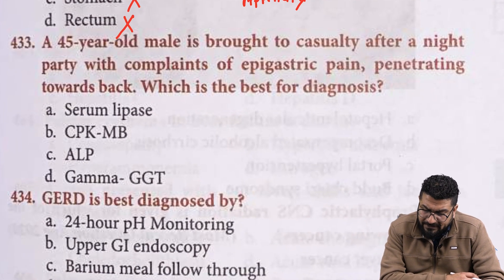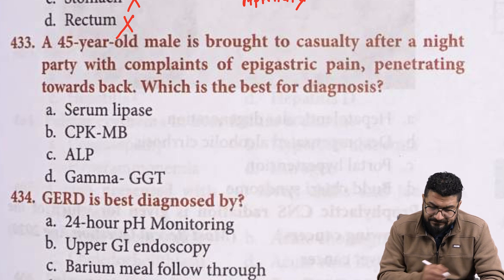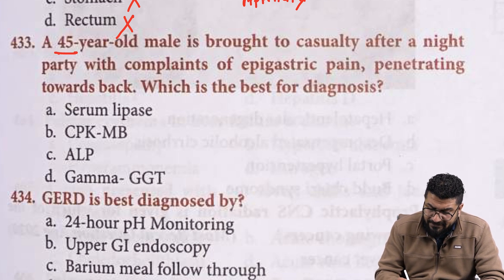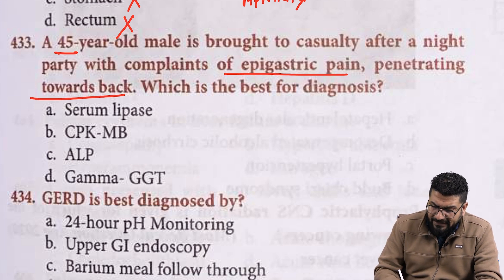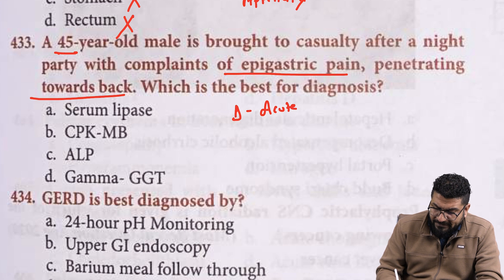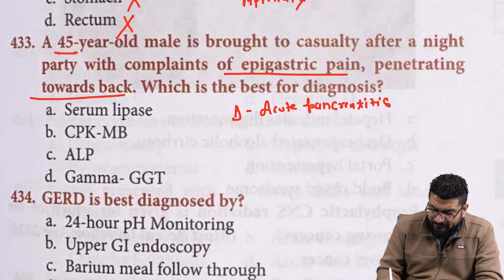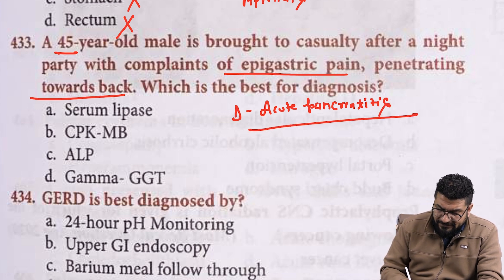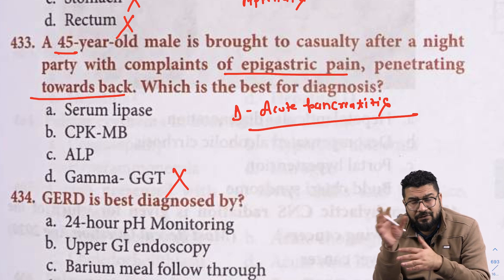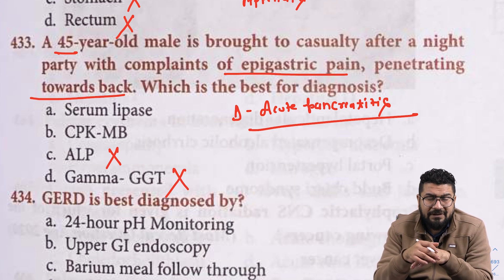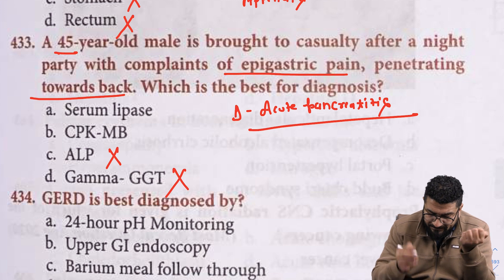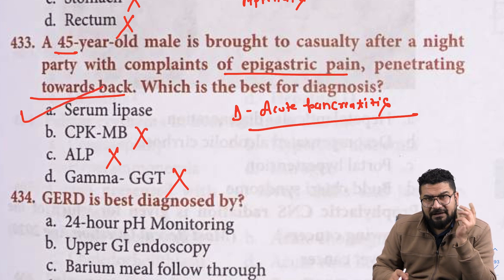45-year-old male brought to casualty after a night party with complaint of epigastric pain penetrating towards the back. Whenever you see abdominal pain radiating towards the back, that is the case of pancreatitis. Diagnosis will be acute pancreatitis. GGT is a marker for cholestasis in the liver; ALP is for liver injury due to hepatocyte damage; CPK-MB is for the heart. So how we make the diagnosis: serum lipase.